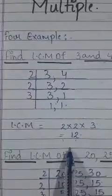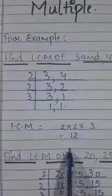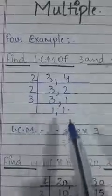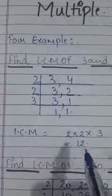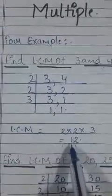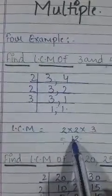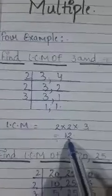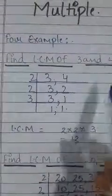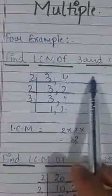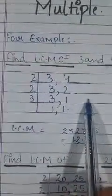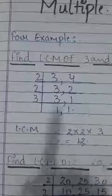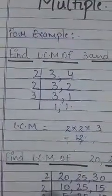This means that when you write the multiples of 3 and 4, the lowest common multiple between these two numbers is 12. For small numbers you can write the multiples and find the lowest common one. But for bigger numbers, it will be difficult to write all the multiples, so using prime factorization like this is easier.